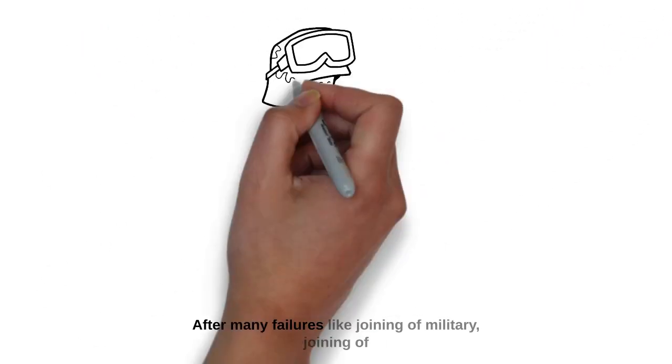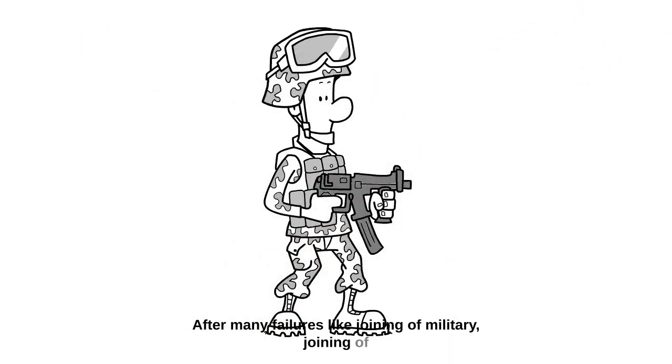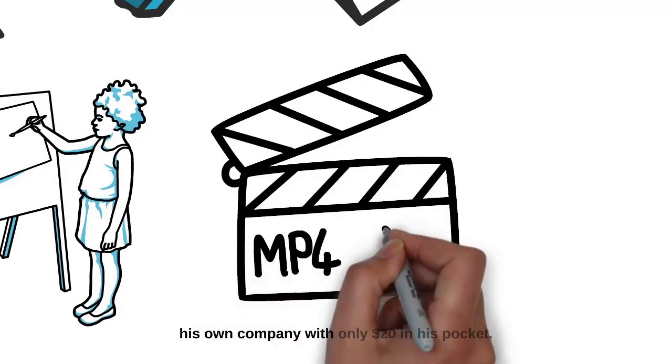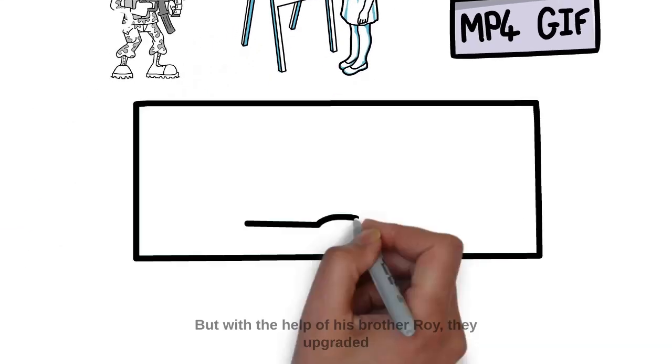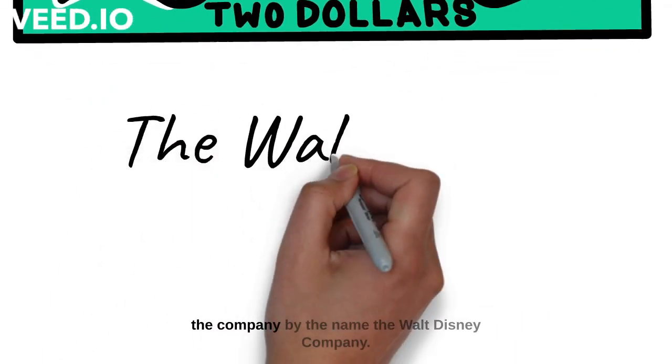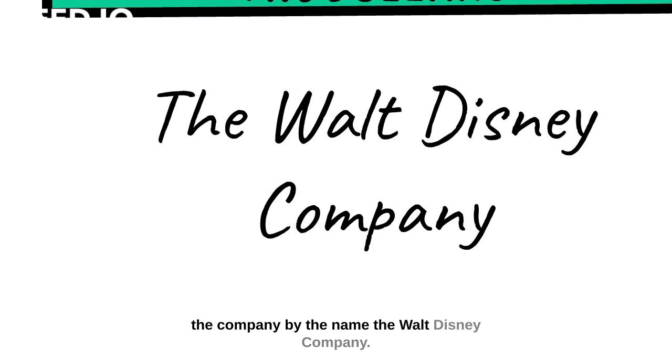After many failures like joining the military, joining art school and art studio, Walt came up with his own company with only $20 in his pocket. But with the help of his brother Roy, they upgraded the company by the name, The Walt Disney Company.